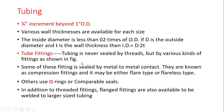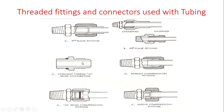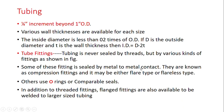Tube fittings: tubing is never sealed by threads, but by various kinds of fittings. Some fittings are sealed by metal-to-metal contact — a dry sealing type — and are known as compression fittings. These may be either flare type or flareless type. Others use O-rings or comparable seals. In larger sizes, flanged fittings are also available, to be welded to the tubing.